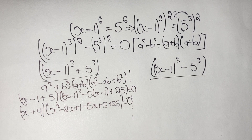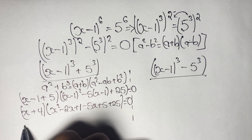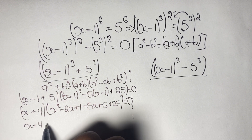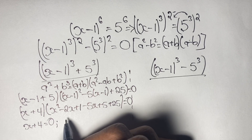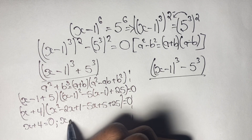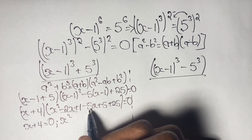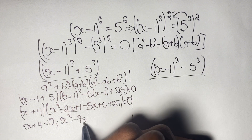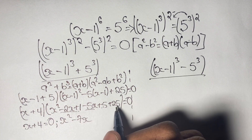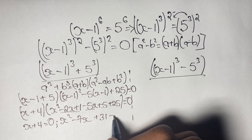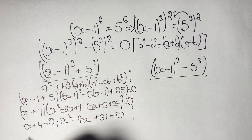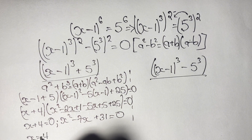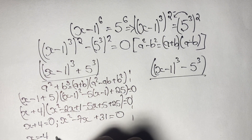Using the zero product property — if two expressions multiply to give 0, then either one or both equal 0 — we have x plus 4 equals 0, or x squared minus 7x plus 31 equals 0. From the first factor, we get x equals negative 4 as our first solution.